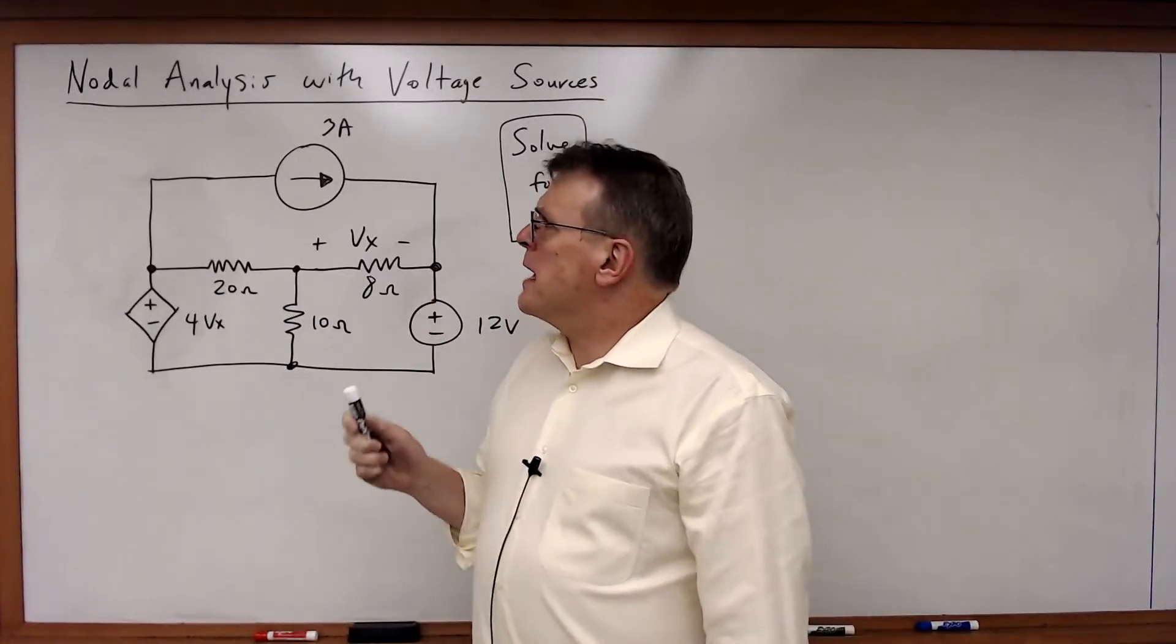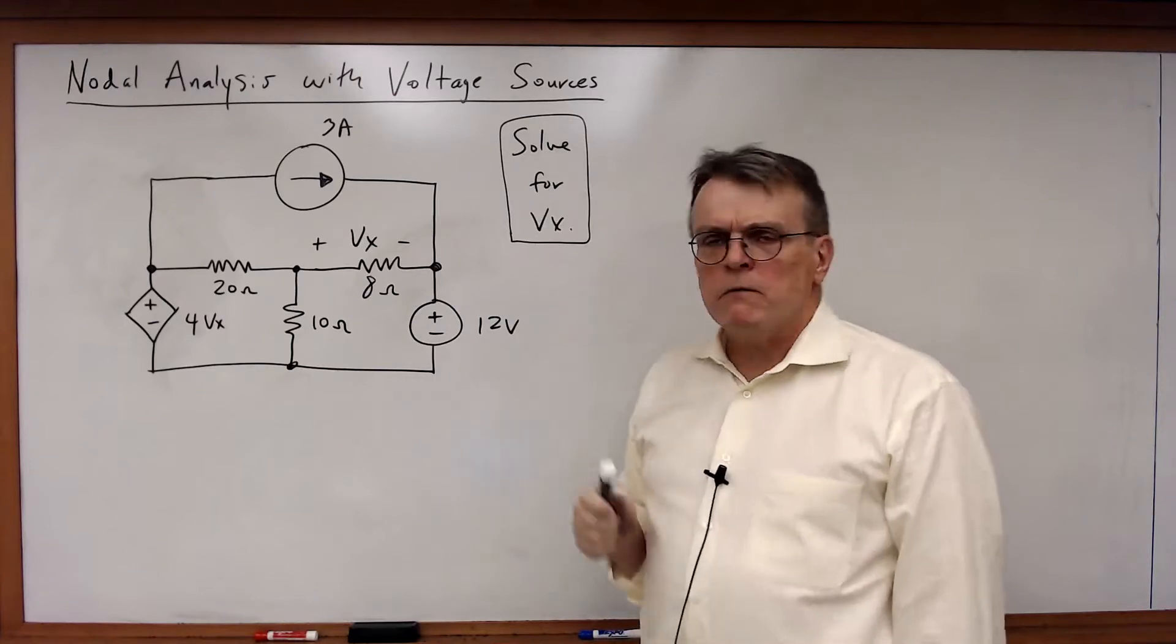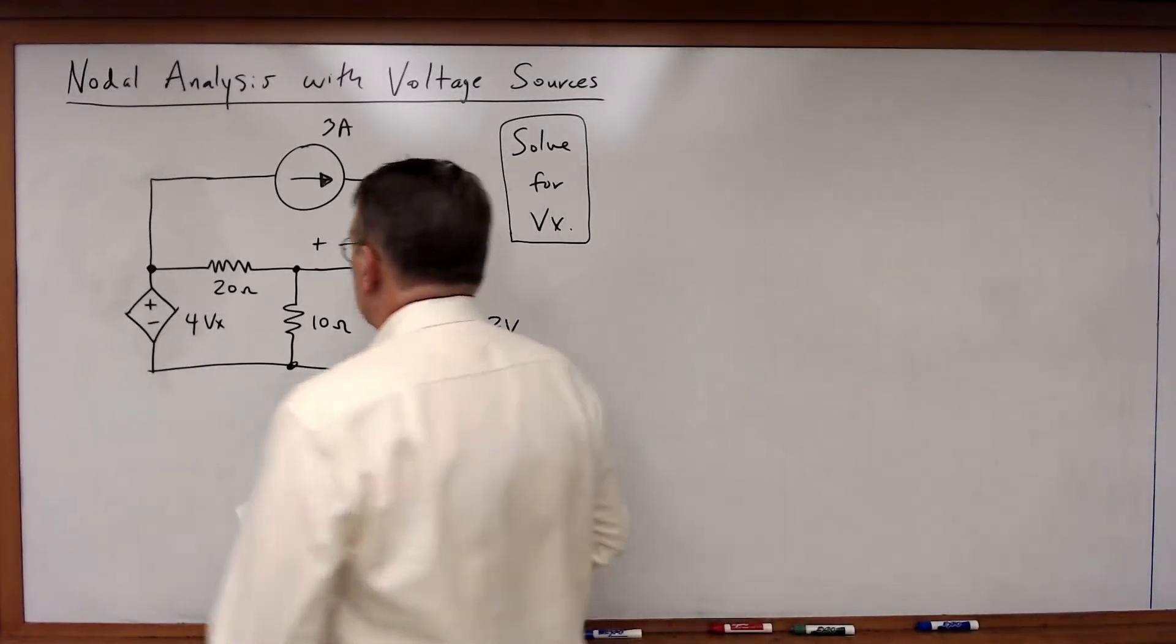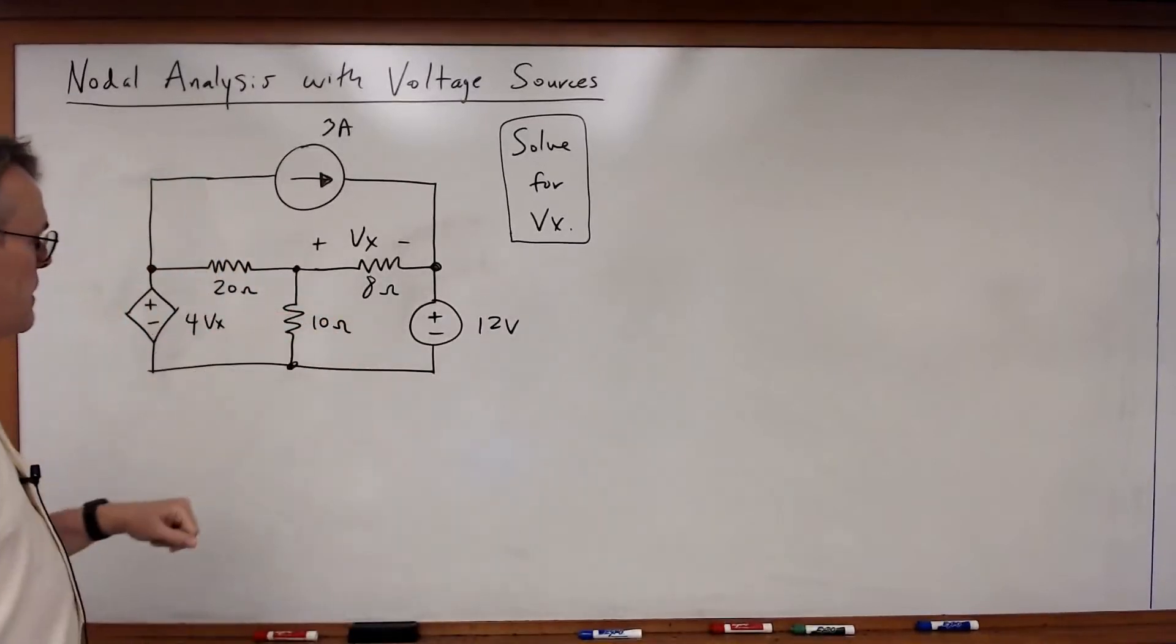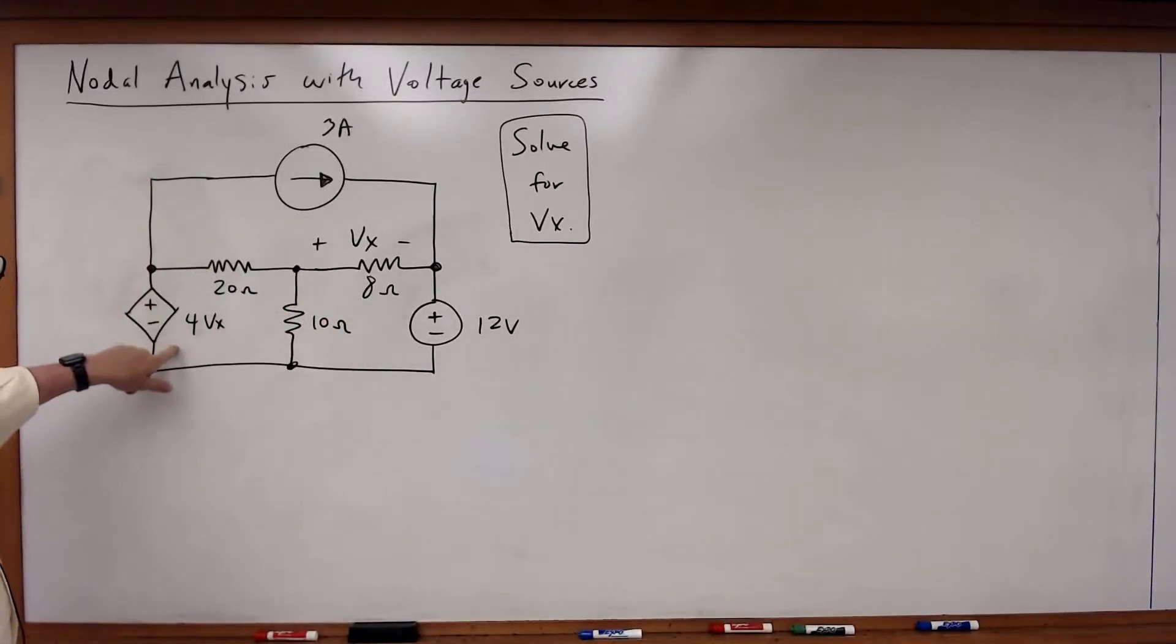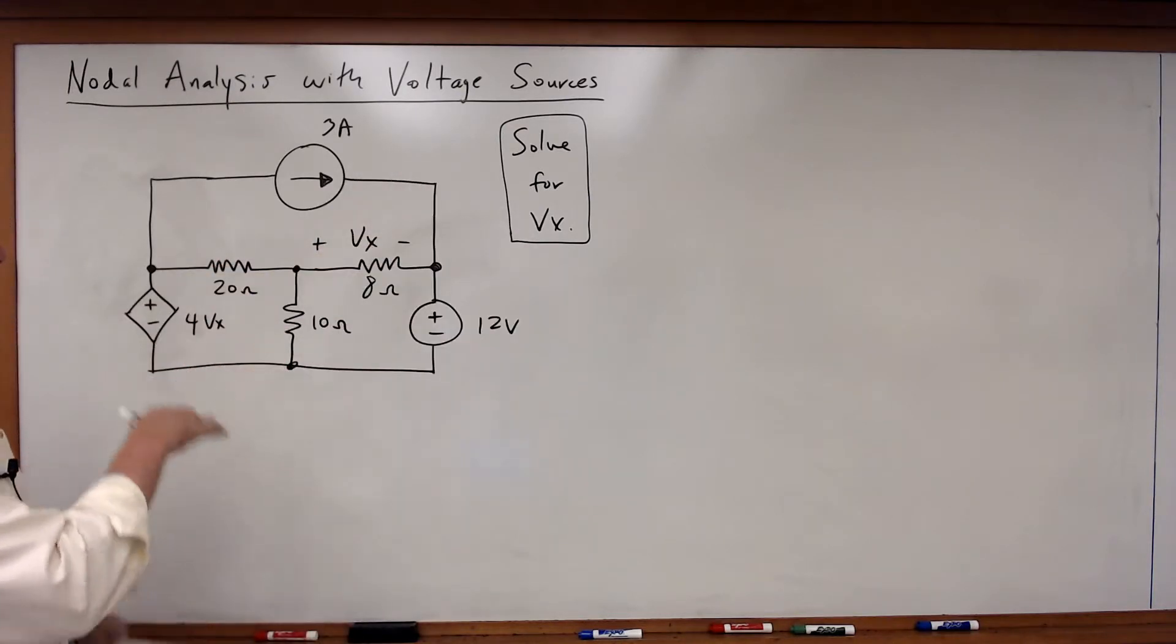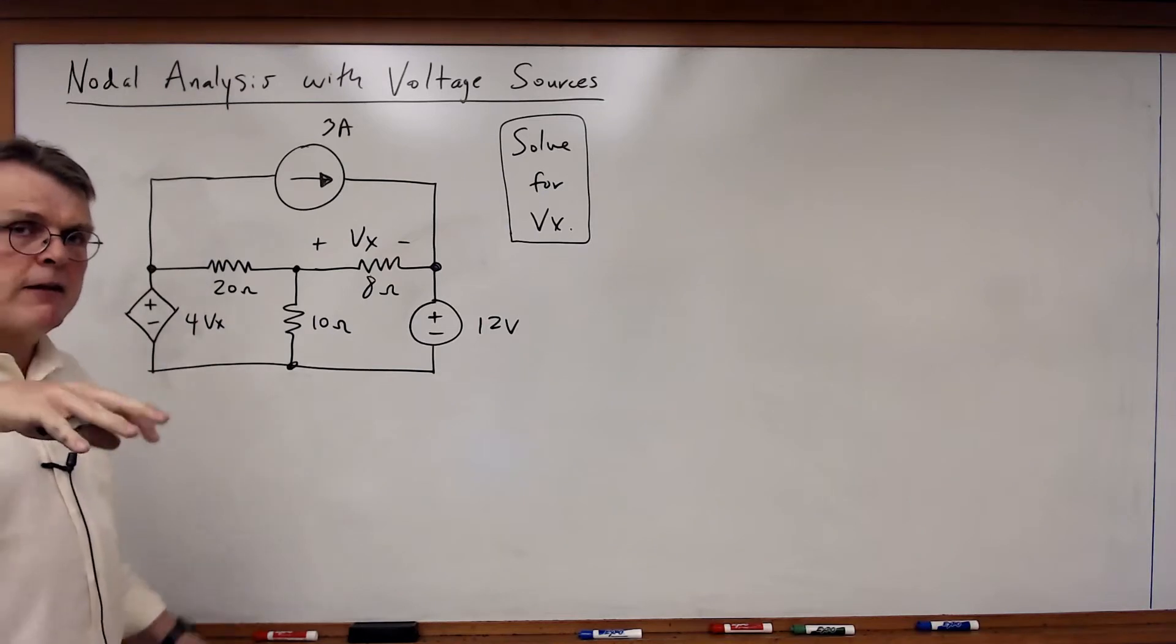Okay, let's look at an example of nodal analysis using voltage sources. In this case, I've drawn an interesting little circuit that has two voltage sources in it, one that's dependent and one that's independent, and we want to solve for this voltage Vx. This is a nice example because it illustrates a whole lot of the things we've been talking about.